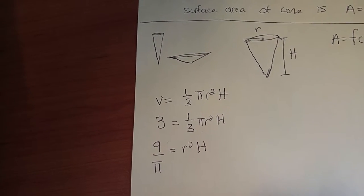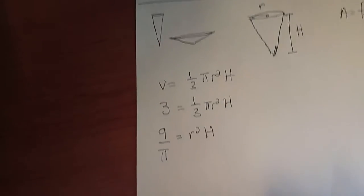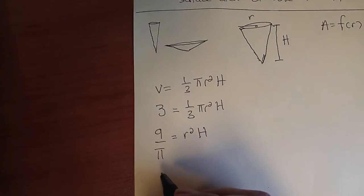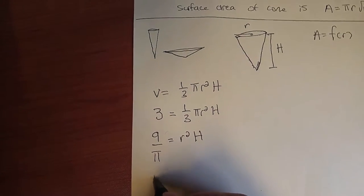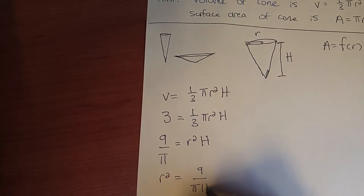And honestly, it doesn't matter which one you do. The math will work out a little bit differently when you take the derivative, but the end result will be the same. So let's go with isolating for r². According to this, r² = 9/(πh).